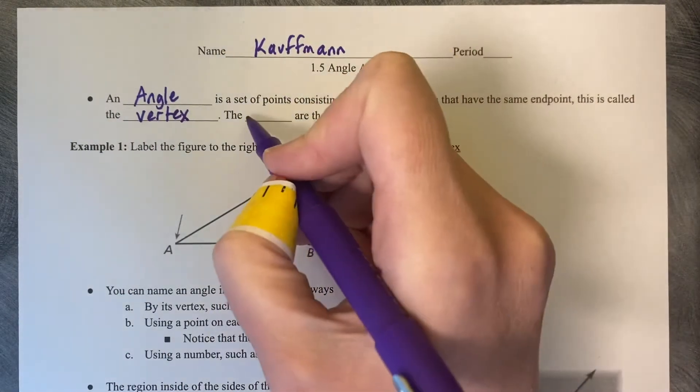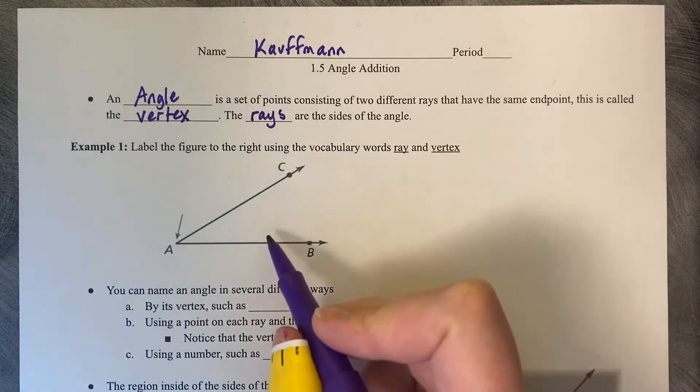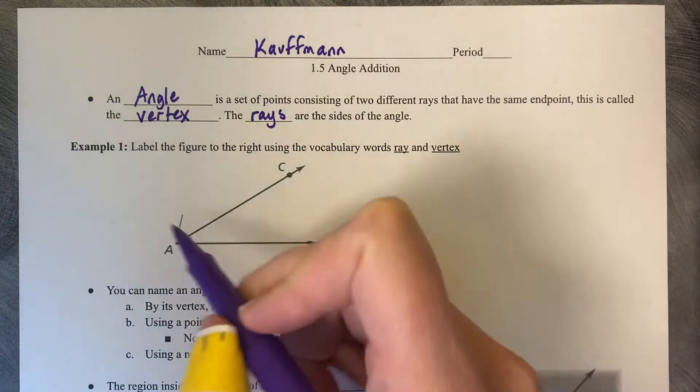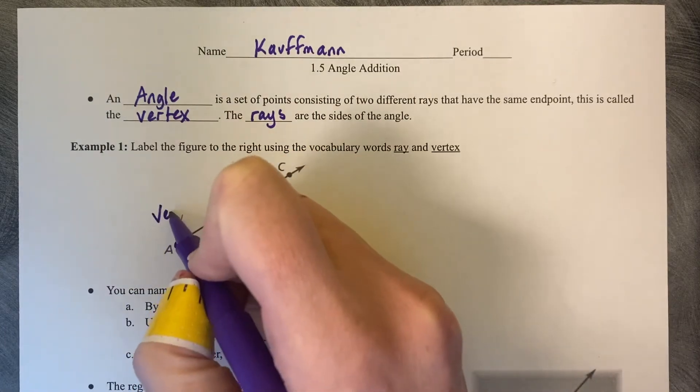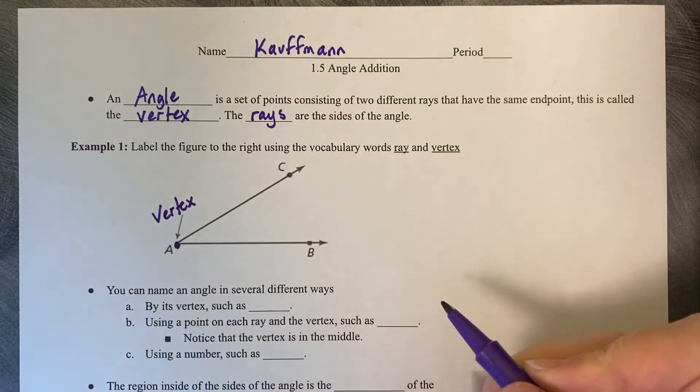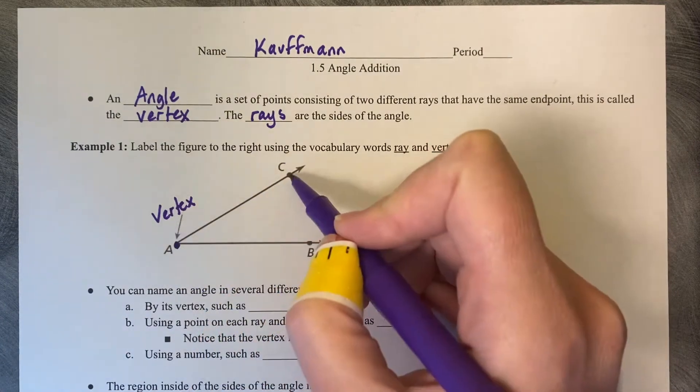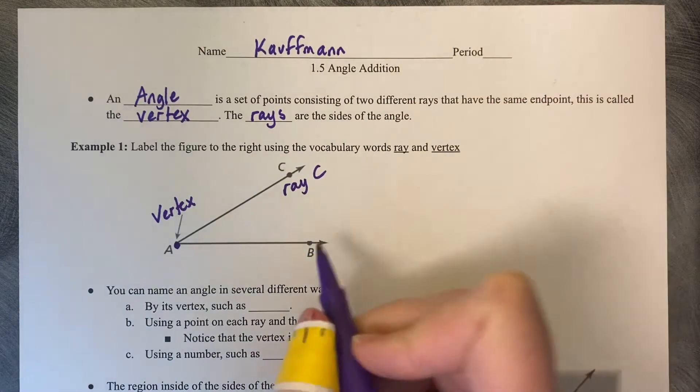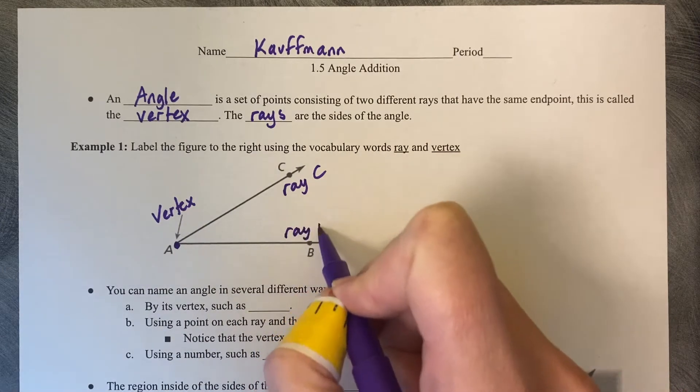The rays are the sides of the angle. Example 1: Label the figure to the right using the vocabulary words ray and vertex. Point A is where the rays begin and this is called the vertex. This point from A to C with an arrow on the end creates ray C. This point A to point B creates ray B.